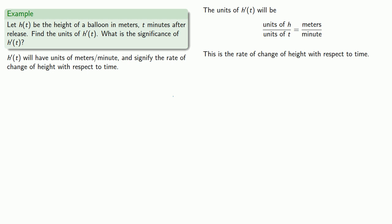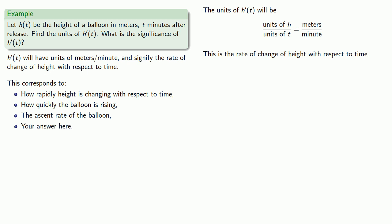And so we're looking at something that corresponds to a change in height with respect to time. And we have many different ways we can state this. For example, we might describe this as how rapidly height is changing with respect to time. Or we might connect it to the fact that we're talking about a balloon and say this is how quickly the balloon is rising. We could even go a little farther and say this is the ascent rate of the balloon.